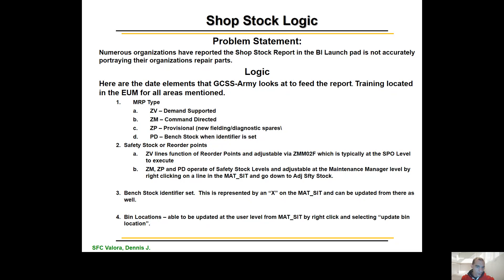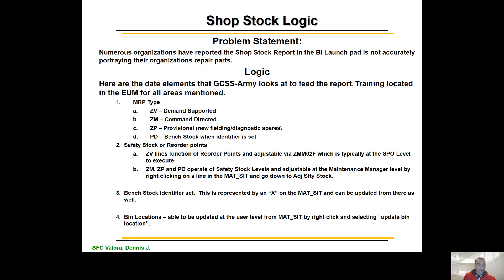The only way to adjust reorder points or to change a ZV line in shop stock is to go through your SPO. There's a certain key code they use — ZMM02FOX. So you have to contact your SPO for that; it cannot be done at the unit level. However, your ZV lines at the unit level do give you the capability to turn off the replenish.